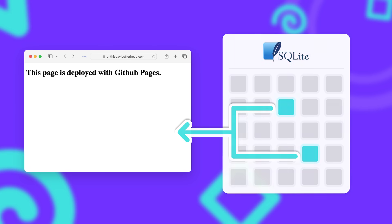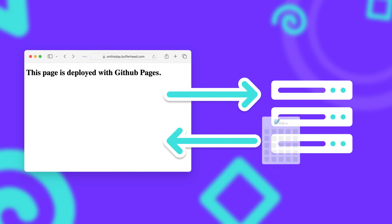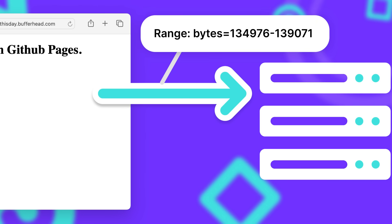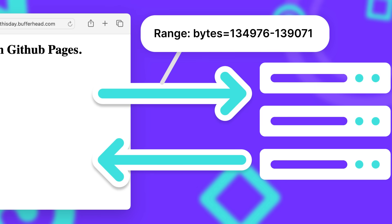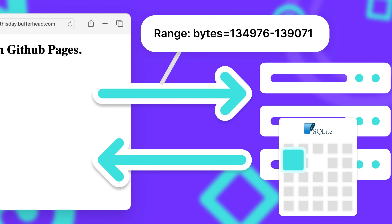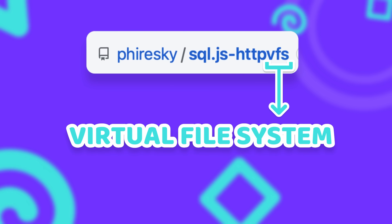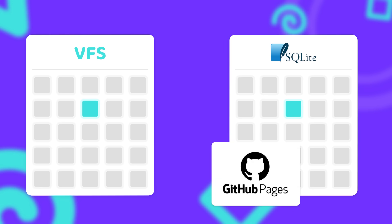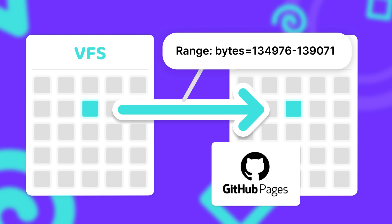So how does it work? Normally when we download a file, we send an HTTP request and get back the entire file — which in our case is way too big. But an HTTP request doesn't have to fetch an entire file. If we add an HTTP range header to our request, we can request just a certain part of the file — and most servers support it, including GitHub Pages. sql.js-httpvfs uses a virtual file system to keep track of what's needed. Every time we execute a query, we try to read a certain range of the SQLite file. Instead of reading from the actual file, we read from the virtual file system, which figures out if data is already loaded or needs to be fetched — using the HTTP range header to load just the required part.